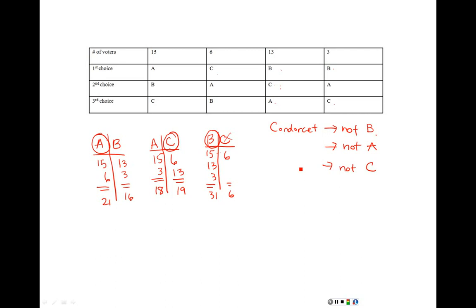When asked to look for a Condorcet candidate, go through each pair of candidates two at a time — just A versus B, ignore the other candidate in the column, and see who's ranked higher. If somebody wins all the one-on-one elections against every other candidate, then they are the Condorcet candidate. In this example, there is no Condorcet candidate.